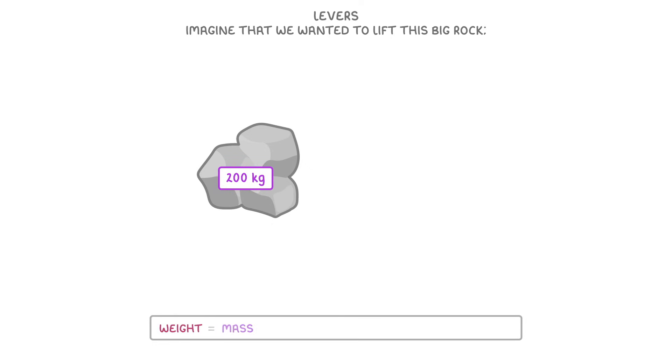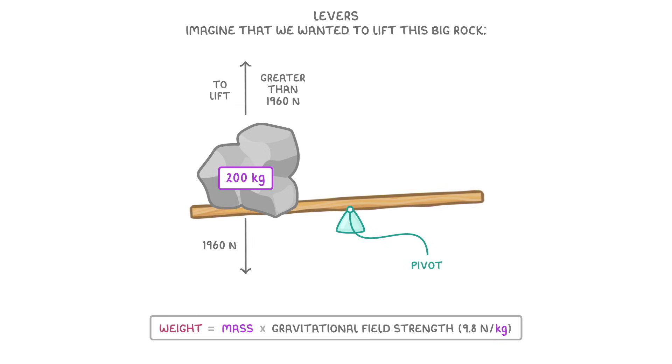To see how this works in practice, let's imagine that we wanted to lift this big rock that had a mass of 200 kilos. Because weight is mass times gravitational field strength, the rock would have a weight of 1,960 newtons downwards, and so for us to lift it directly, we'd have to apply an upwards force greater than 1,960 newtons, which is way more than most people could lift. However, if we placed something solid next to it to act as a pivot, and then we weighted a plank between the two of them, we'd have created a lever.